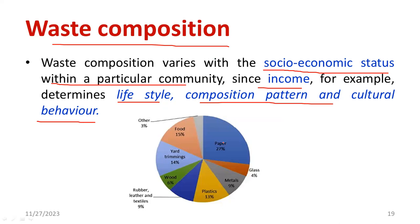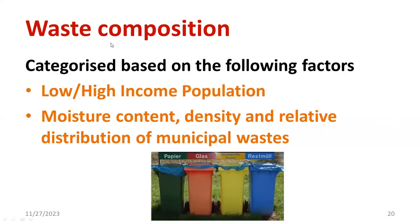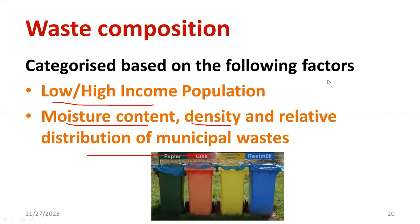A pie chart is given for a community where a certain amount of waste was collected. We found that 27% of the waste is paper, 13% is plastic, 9% is metal, 4% is glass, and 15% is wood. These are called composition segments. Waste composition depends on income, purchasing power, moisture content, density of the waste, and the relative distribution of municipal waste — all of these are factors affecting waste composition.